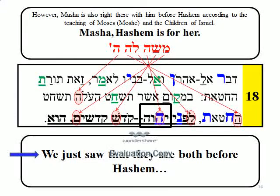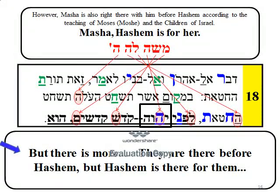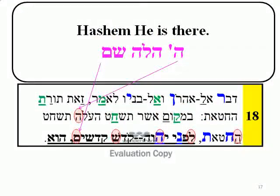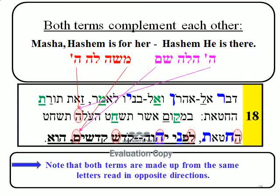We just saw that they are both before Hashem. Within the name of Hashem, the letter He — that represents Hashem — connects the term Masha with her groom and before Hashem. But there is more: they are there before Hashem, but Hashem is there for them. Hashem, He is there. Both terms complement each other: 'Masha, Hashem is for her' and 'Hashem, He is there.' Note that both terms are made up from the same letters read in opposite directions.